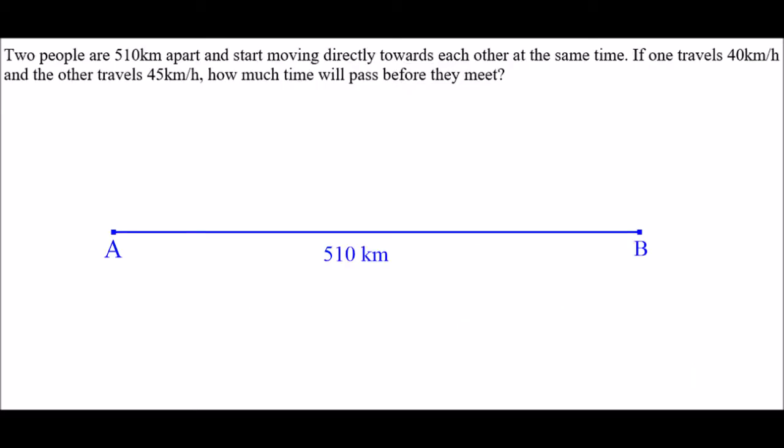It's question four, which is from the linear systems section. The question says: two people are 510 kilometers apart and start moving directly towards each other at the same time. If one travels 40 kilometers per hour and the other travels 45 kilometers per hour, how much time will pass before they meet?